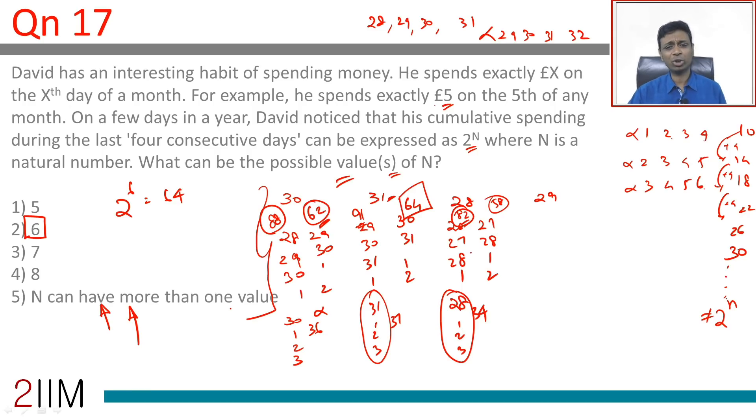N equals 6 is possible. 7 would take us to 128—impossible. 5 is a possibility, but 29, 30, 1, 2, 3 takes us to 35, and even 30, 31, 1, 2 is 64. No other total is possible. The only possible value of N is 6, when the four dates are 30, 31, 1, 2.